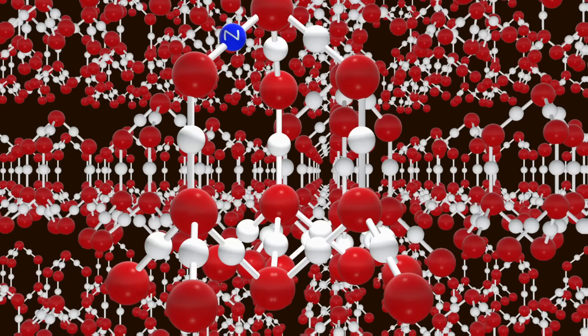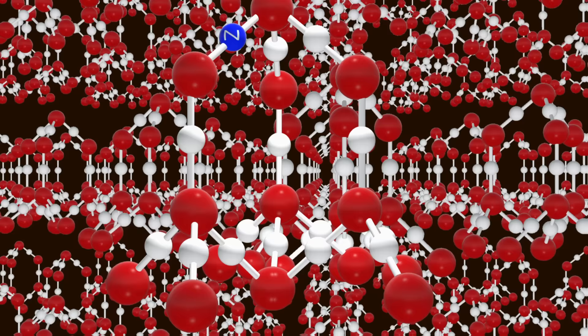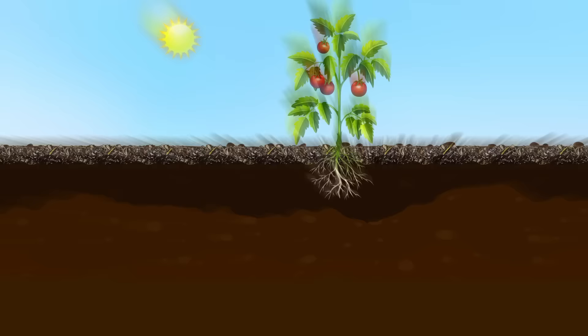At the molecular level, the parent material comprises large lattice structures which hold nitrogen, phosphorus, potassium, boron, calcium, iron, and all the other nutrients that a plant needs.